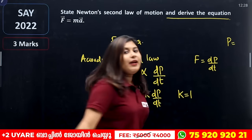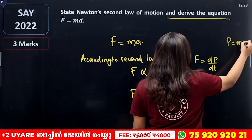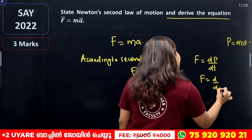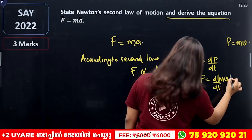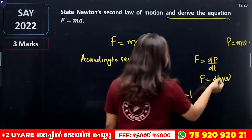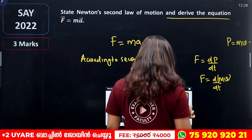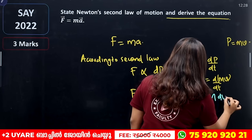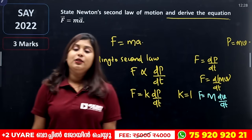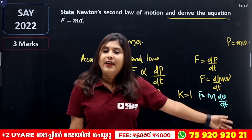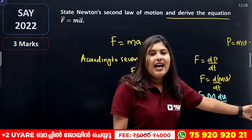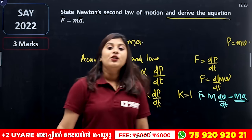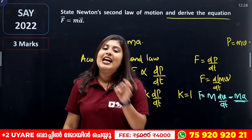So F is equal to dp/dt. Now, momentum p is mass into velocity. F is equal to d/dt of mass into velocity. Considering mass as constant, F is equal to m into dv/dt. The rate of change of velocity is called acceleration. Substituting, F is equal to m into a. So F = ma.